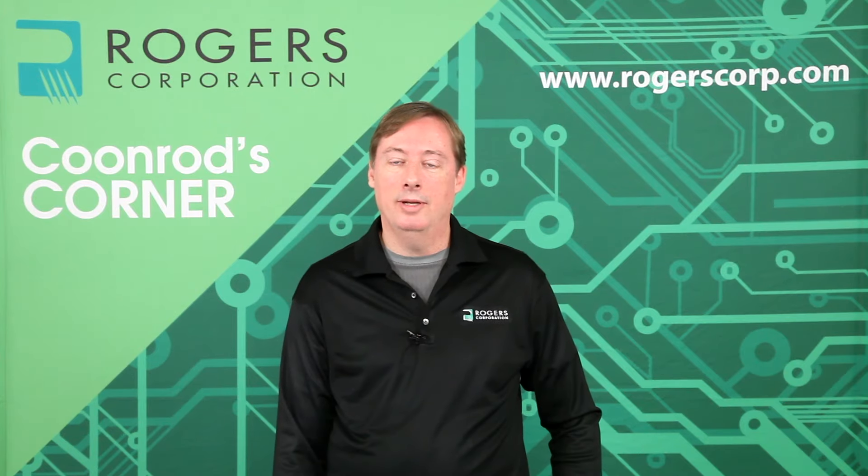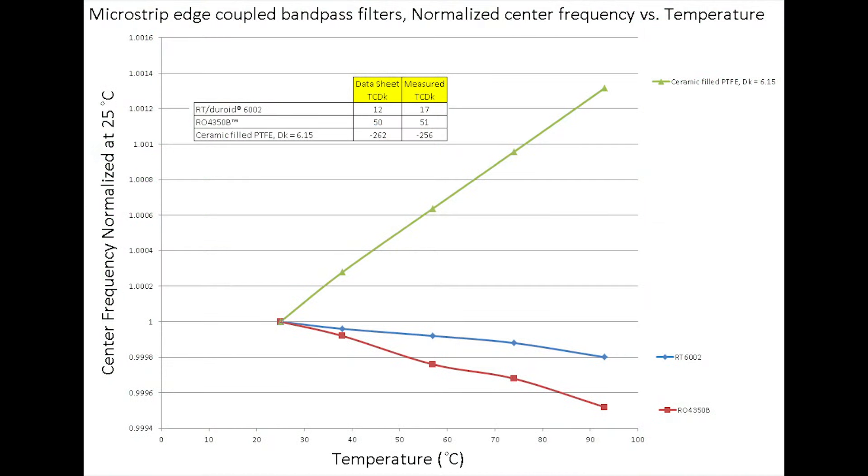Here I've given a graph to explain this. In the graph shown, I have microstrip edge-coupled bandpass filters, and what I've done was normalize them at room temperature, about 23 to 25 degrees C. Then I would change the temperature and look for a response shift in frequency and record that. You can see the material that is very well behaved for TCDK is the RT Duroid 6002 laminate and the Rogers RO4350B laminate. The 6002 laminate has a TCDK of about 12 to 17, and the RO4350B laminate is about a 50 TCDK. Both of those numbers are considered very good for TCDK.